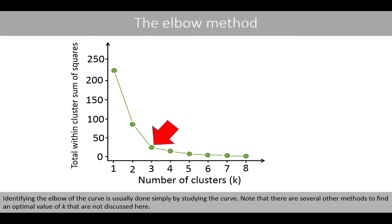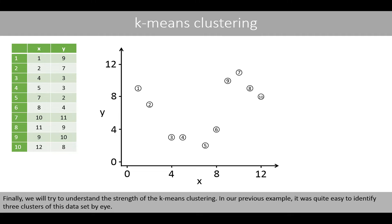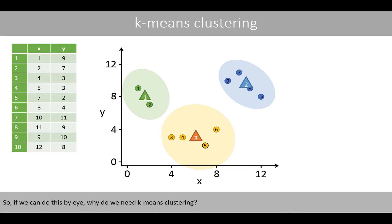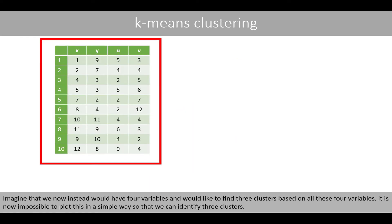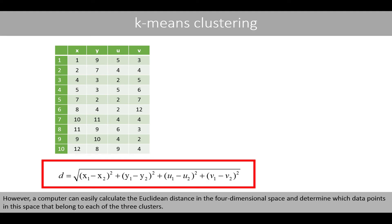Identifying the elbow of the curve is usually done simply by studying the curve. Note that there are several other methods to find the optimal value of k that are not discussed here. Finally, let's understand the strength of k-means clustering. In our previous example, it was quite easy to identify three clusters of this dataset by eye. But imagine we instead had four variables and would like to find three clusters based on all four variables — it is now impossible to plot this simply to identify three clusters. However, a computer can easily calculate the Euclidean distance in the four-dimensional space and determine which data points belong to each of the three clusters.